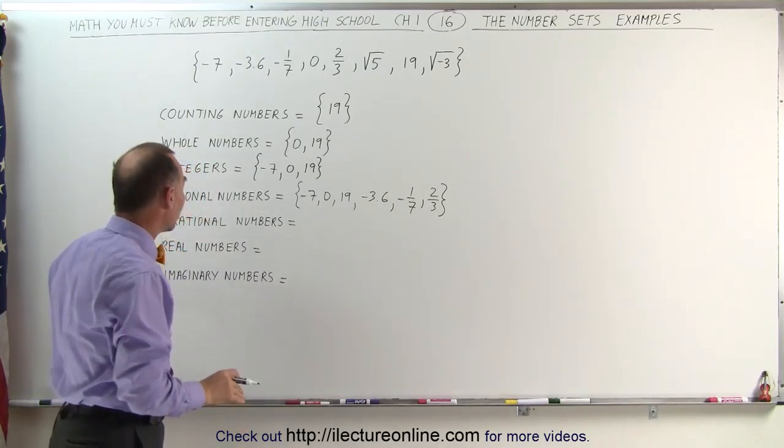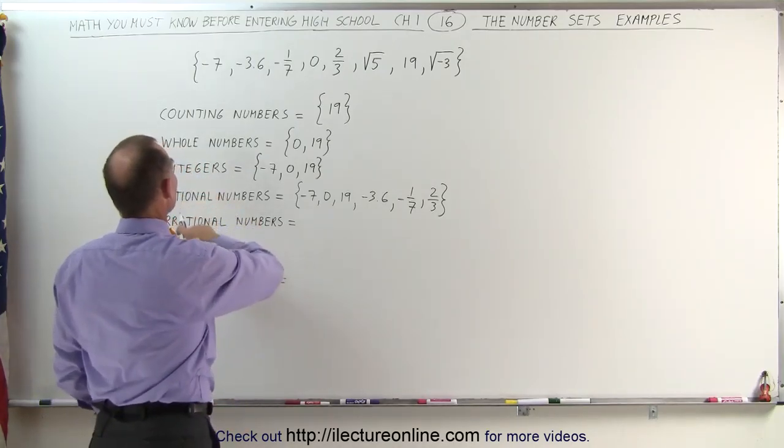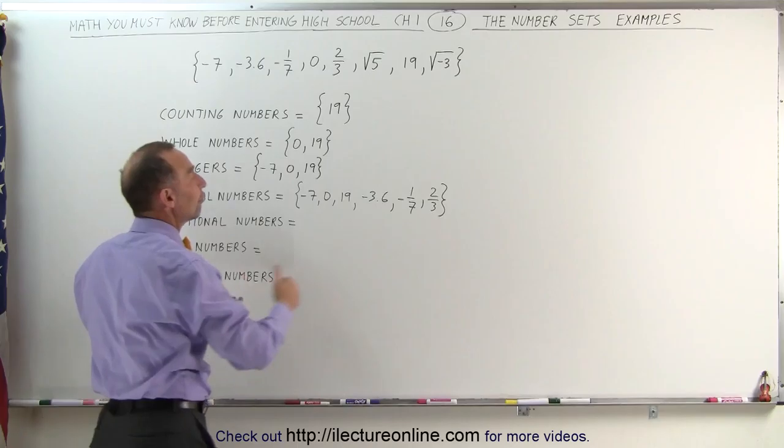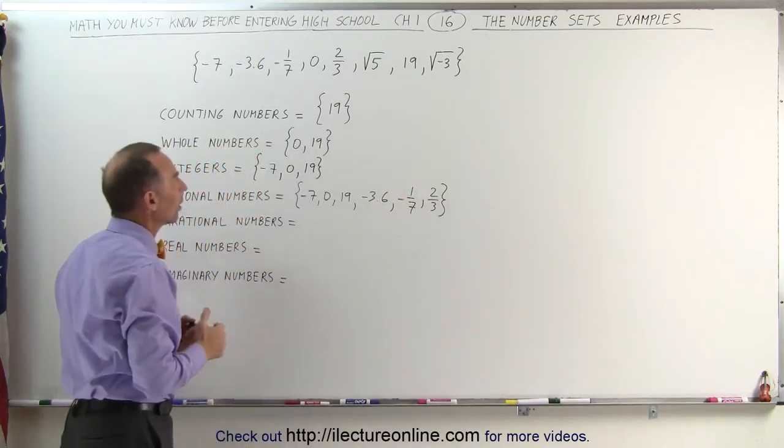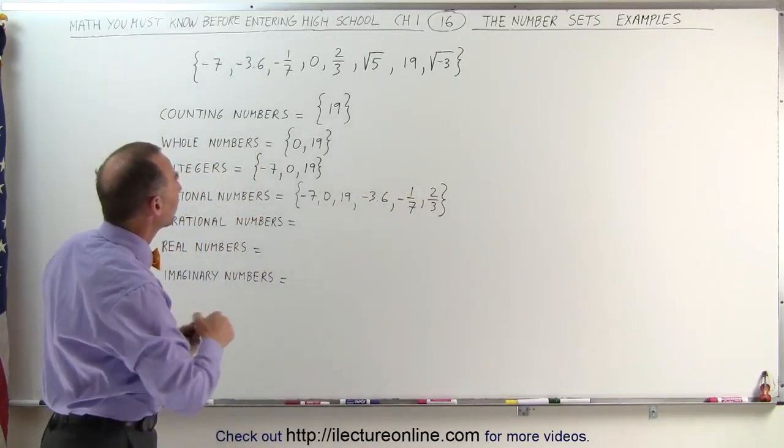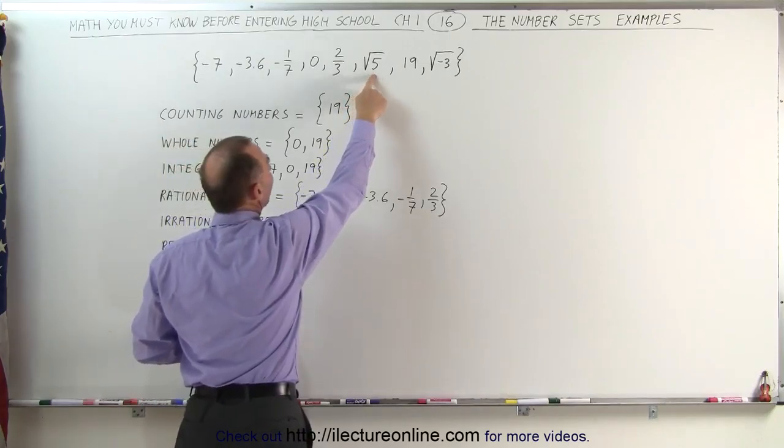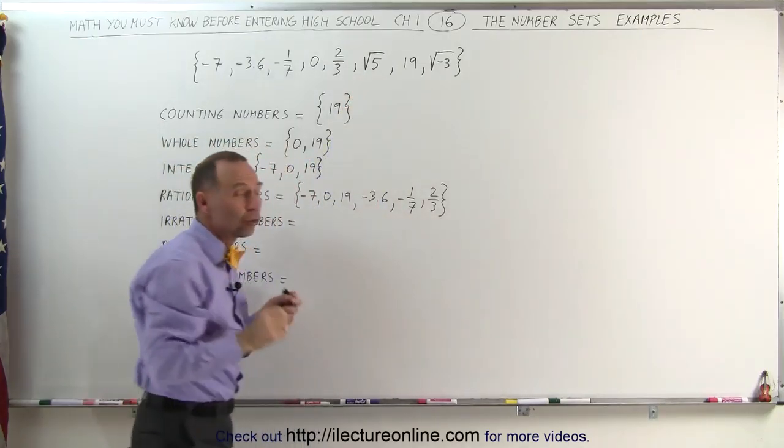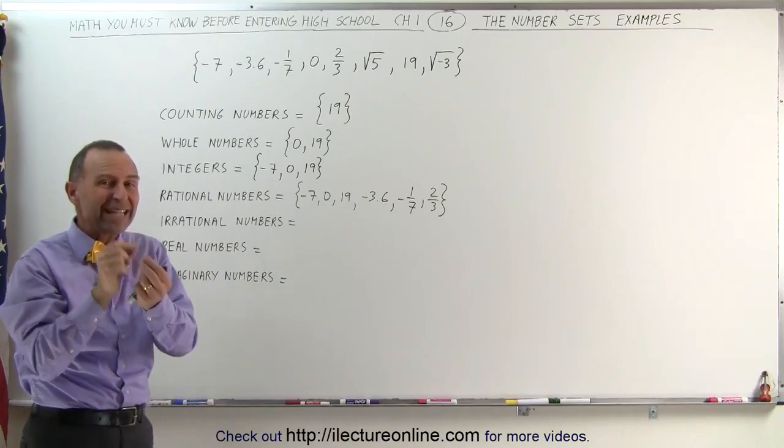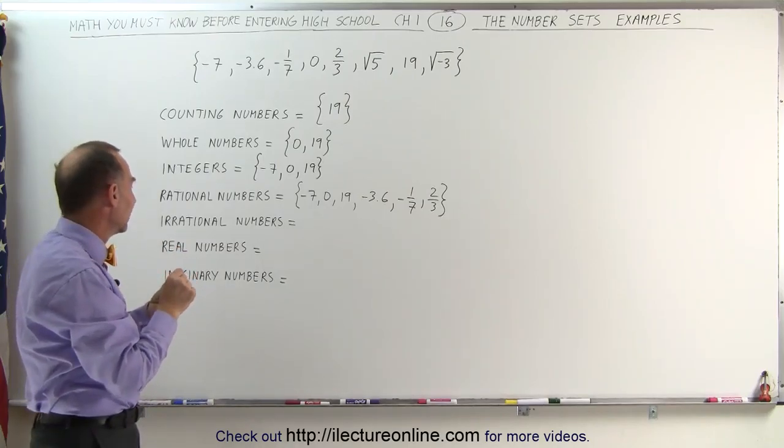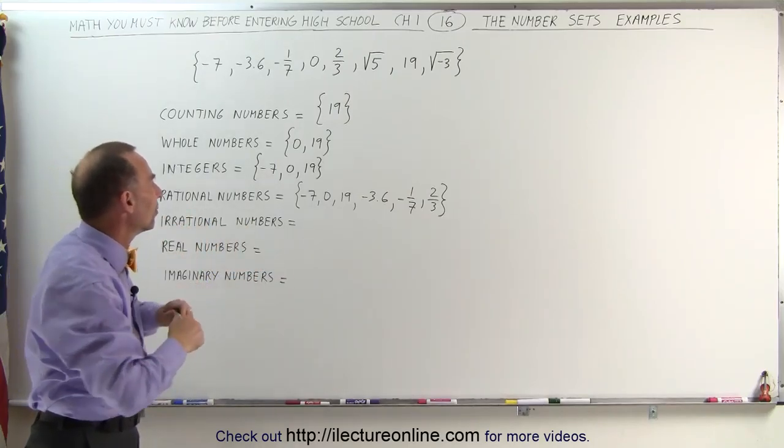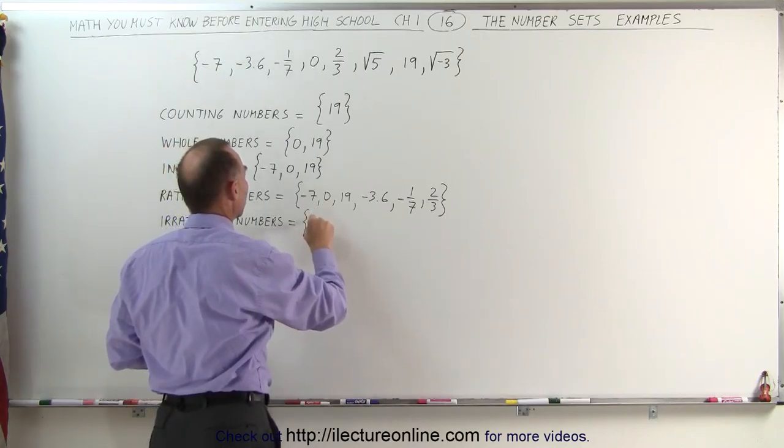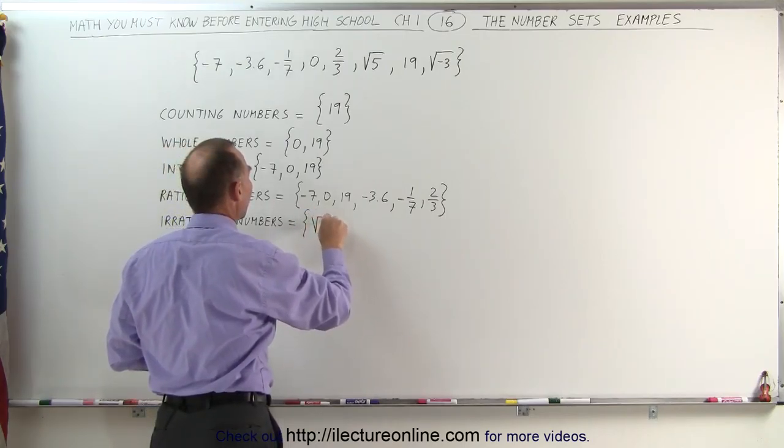The irrational numbers are the numbers that are not rational. In other words, we cannot put them in the form A over B. Is there any there? Well, there is. It's the number the square root of 5, because even though the square root of 5 is on the number line, we cannot find the exact value of that number. That makes it an irrational number. So this would then be the square root of 5.